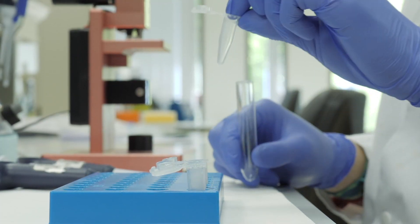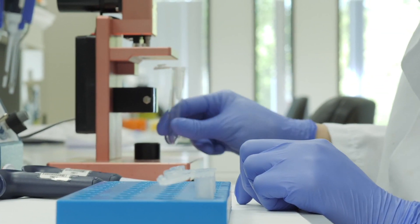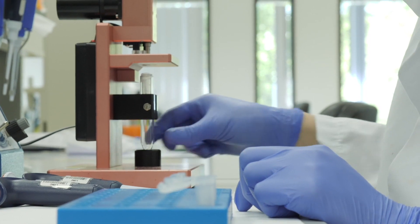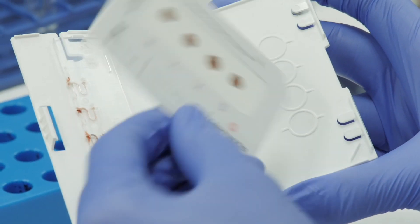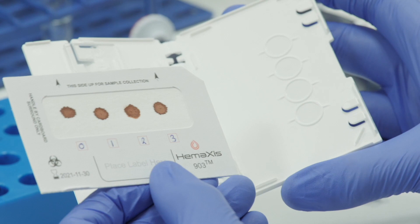After this, the technician readies the test tube. Next, he takes out a dry blood spot card from the holder and puts it in a specialized type of paper puncher.